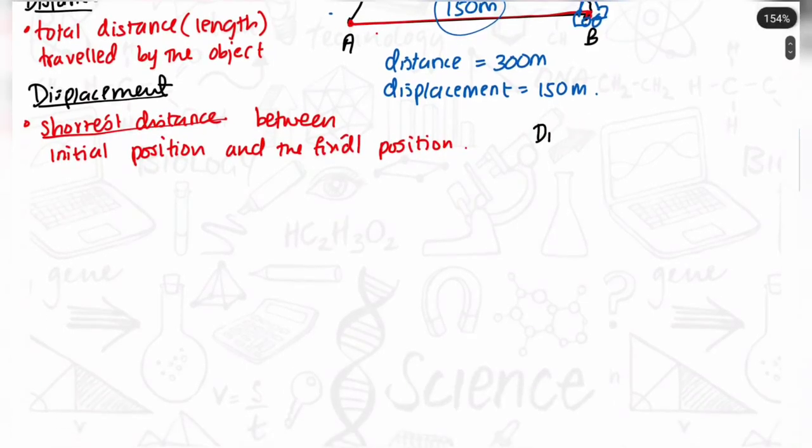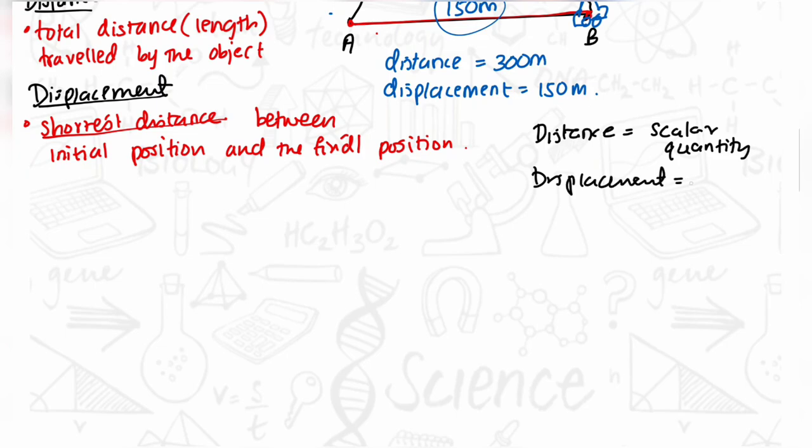Now the next thing we should know is that distance is a scalar quantity while displacement is a vector quantity. To understand the difference between these two...